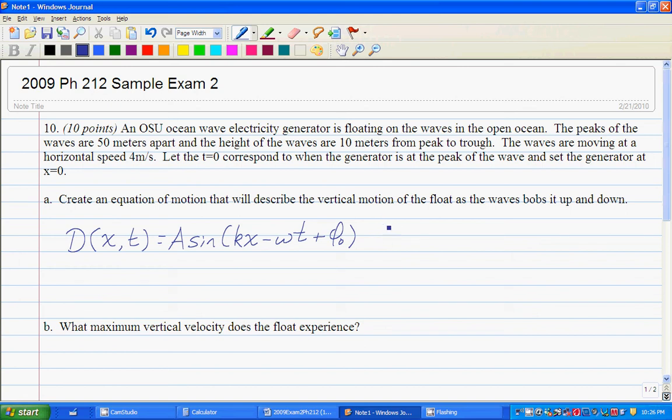So what's going on is we have waves traveling down the ocean and we know that the height of the waves are 10 meters from peak to trough. We know that the waves are traveling at 4 meters per second, and we call t equal to 0 when the generator was at the top.